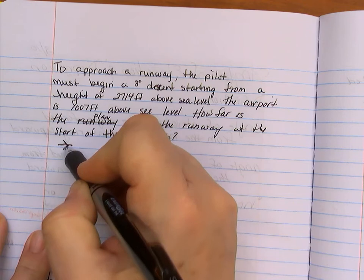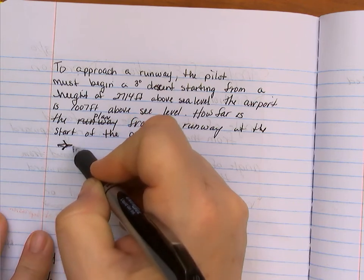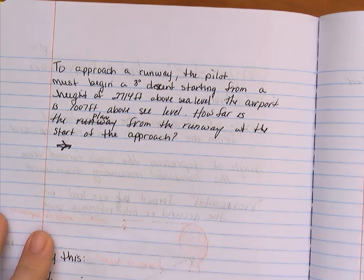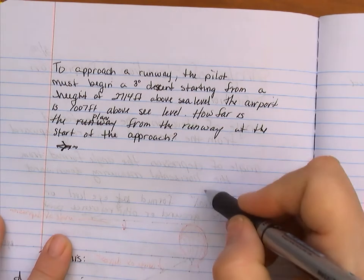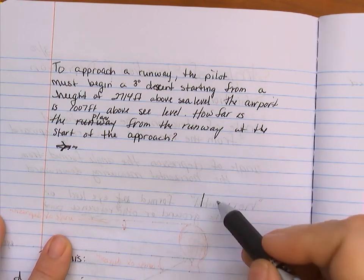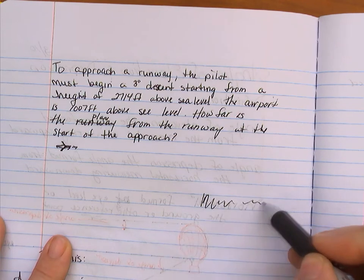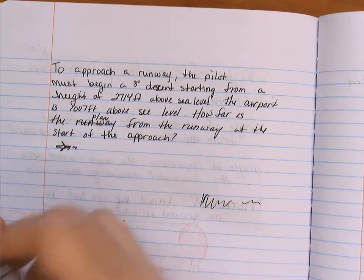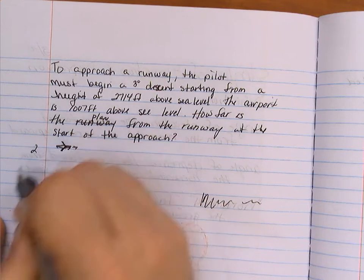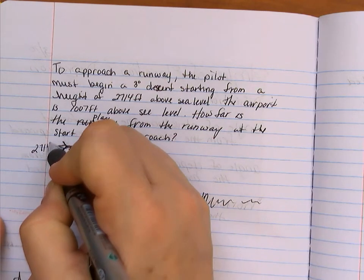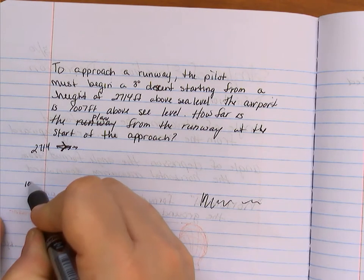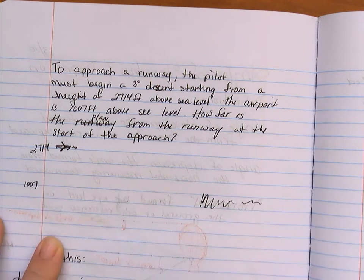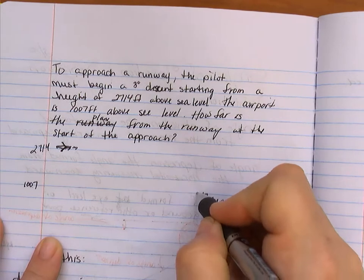So here's your little airplane. Right? Oh, that's a terrible plane. There's my airplane. I'm headed that way. And my airport is over here. So I'm looking for this runway. I'm trying to hit the runway. And I know that I am at 2,714 feet high and the runway is at 1,007 feet. Okay. So here I am. I'm trying to hit this.